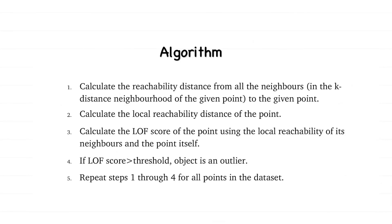First, calculate the reachability distance of all the neighbors, that is the neighbors which are in the k-distance neighborhood of the given point, to the given point. Then calculate the local reachability distance of the given point. Next, calculate the LOF score of the point, after which the LOF score is compared to the threshold. If the score is greater than the threshold, the object is an outlier, else it is an inlier.